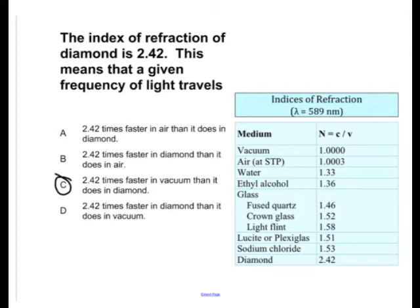Well, n is equal to c over v, and v is equal to c over n. So if you plug in the medium for vacuum, we get that velocity is equal to c.